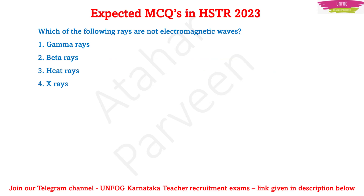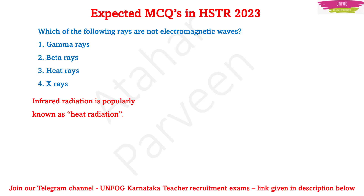This type of question can be asked in HSTR 2023 based on electromagnetic waves. The question is: which of the following rays are not electromagnetic waves? Gamma rays, heat rays, and X-rays belong to the electromagnetic spectrum. Heat rays are nothing but infrared rays — infrared radiation is popularly known as heat radiation. So the odd one out from the four options is beta rays, because gamma rays, infrared rays, and X-rays belong to the electromagnetic spectrum, whereas beta rays are not found in the electromagnetic spectrum.